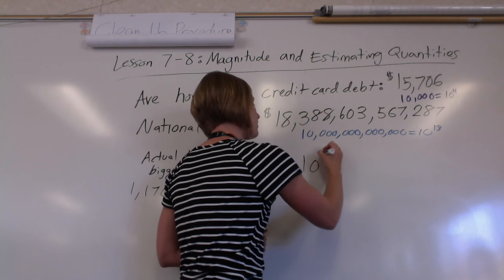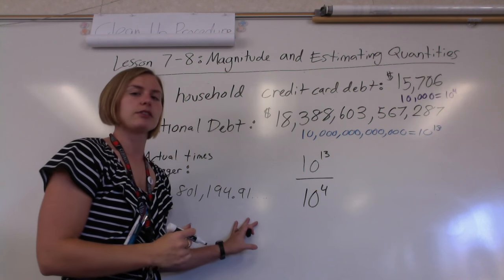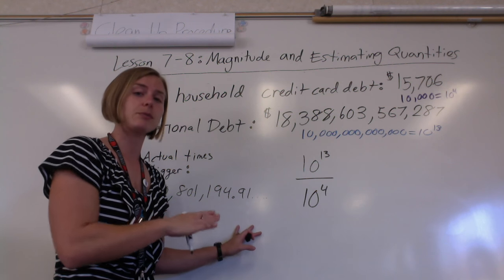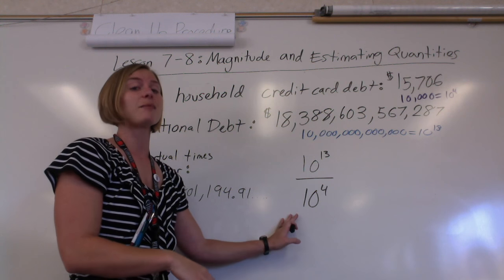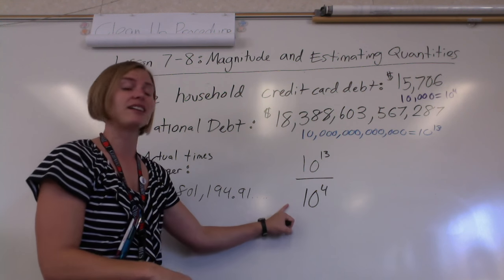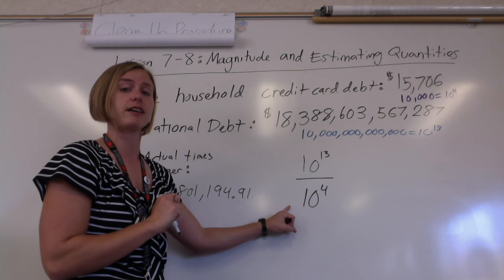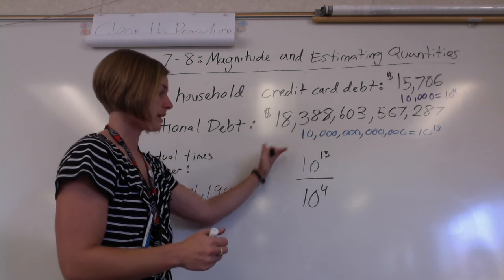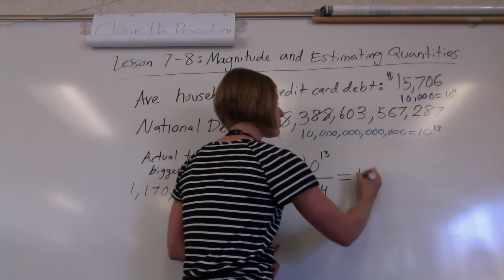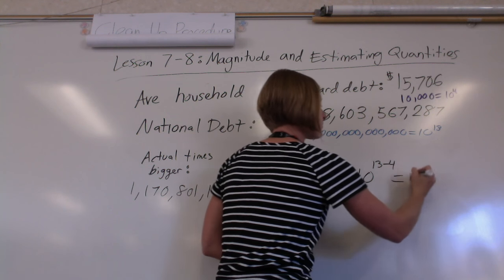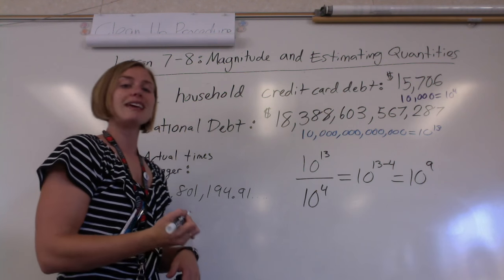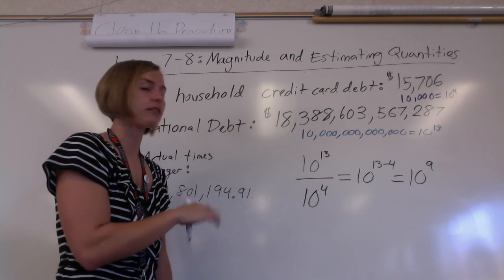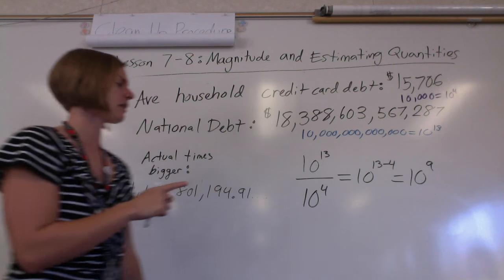We're going to compare 10 to the 13 to 10 to the 4. We've been doing a lot with those kinds of problems — that's exactly why we do exponents before these lessons. Now that we've changed these to powers of 10, they're just exponents, and we can use the quotient rule. 10 to the 13 divided by 10 to the 4, by our quotient rule, we do 13 minus 4 — so that's 10 to the power of 9. The national debt is 10 to the 9th power bigger than the credit card debt. And take a look — that estimate was actually pretty close to the real answer.